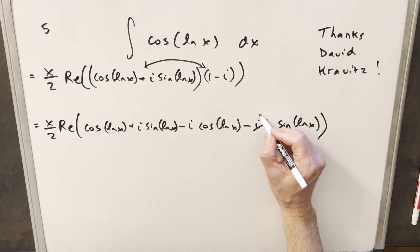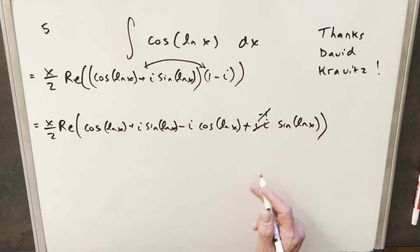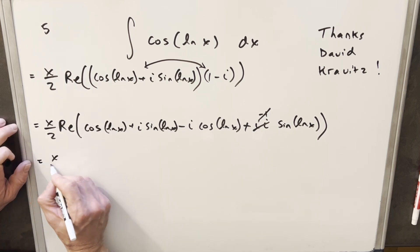Now i times i, this is actually minus 1. But minus times minus 1, this just becomes a plus and that goes away. But now all I really need to do is rewrite this in our a plus bi notation.